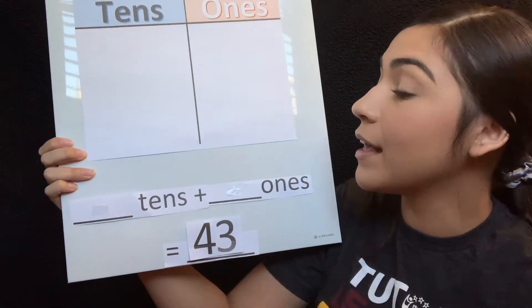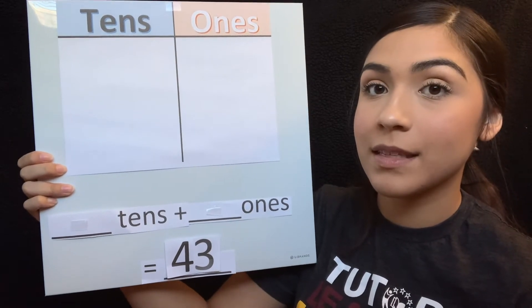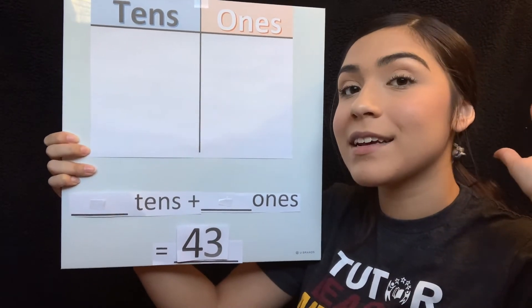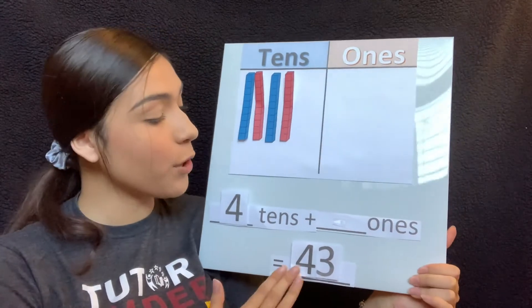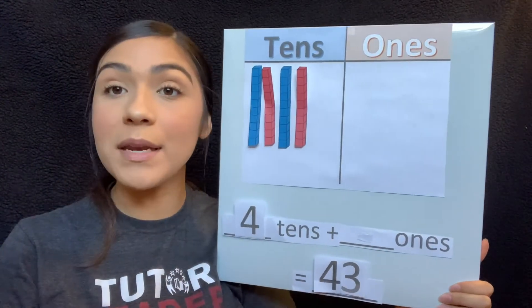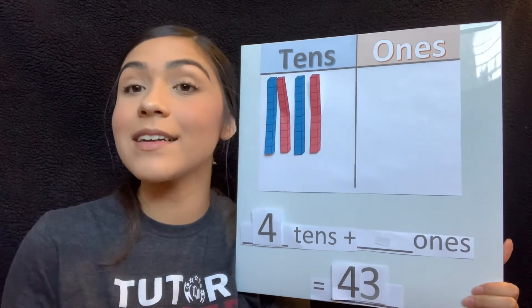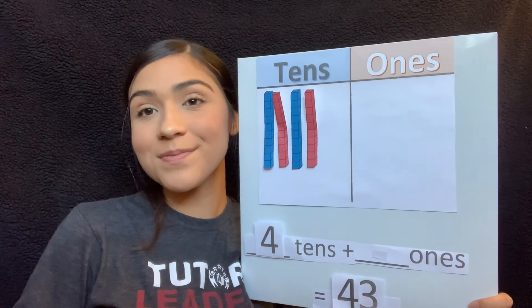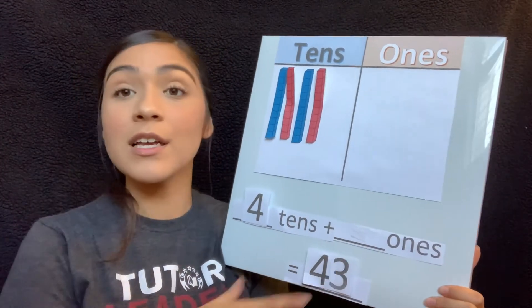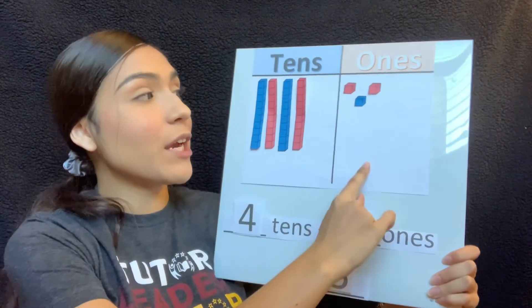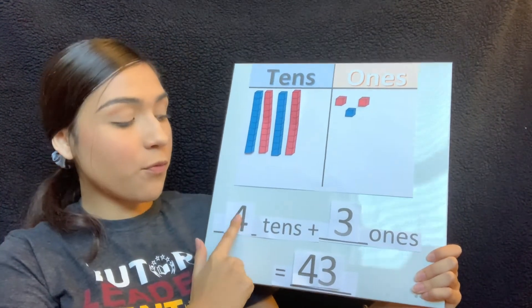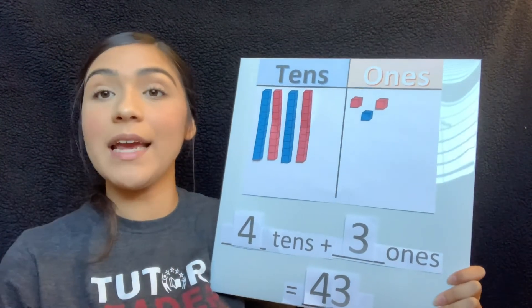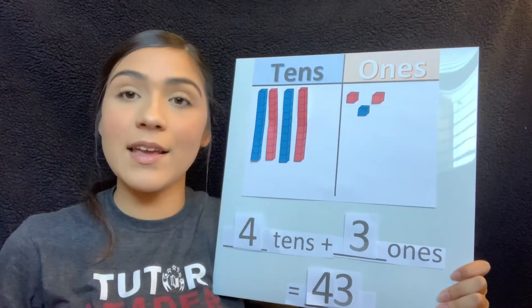Our next number is 43. So tell me, how many tens am I going to need? How many ten blocks? Four. I'm going to need four ten blocks. So let's add that. Now tell me friends, how many ones do I need to add to get 43? We already have our four tens, so how many more ones do we need? Three. We need to add three ones. So we added that to our equation and to our ones place. We have four tens plus three ones makes 43. All of them together makes 43. Great job guys.